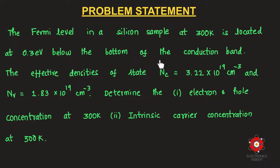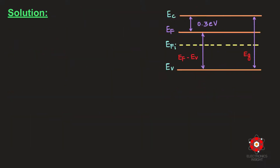The effective density of states for the conduction band is Nc = 3.22×10¹⁹ cm⁻³, and for the valence band Nv = 1.83×10¹⁹ cm⁻³. We need to determine the electron and hole concentration at 300 K and the intrinsic carrier concentration at 300 K.